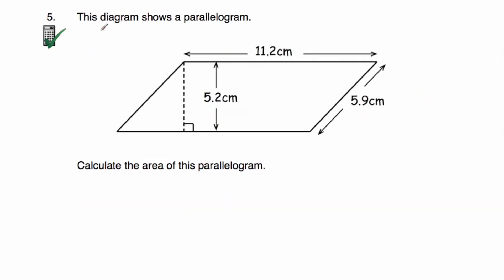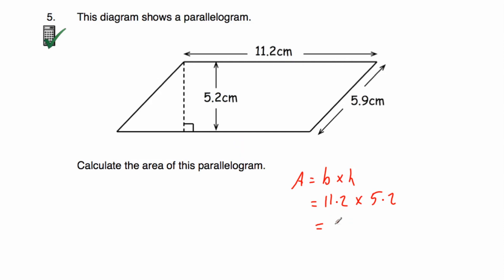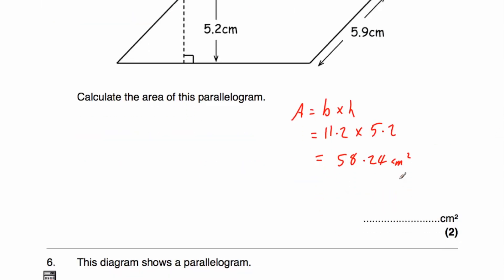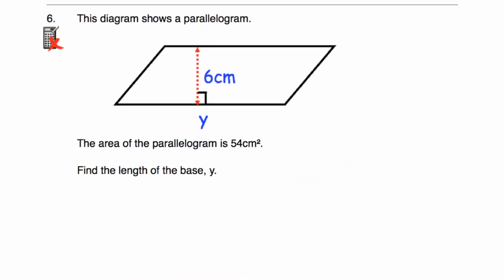Question number five says: this diagram shows a parallelogram with a length of 11.2 centimeters, a height of 5.2 centimeters, and a slant side of 5.9 centimeters. We don't need the slant side — we just need base times height. Area equals 11.2 multiplied by 5.2. Using our calculator, 11.2 times 5.2 equals 58.24 centimeters squared. That's the area of the parallelogram.